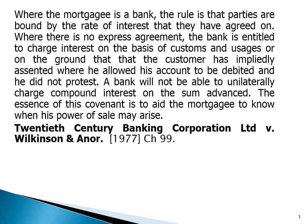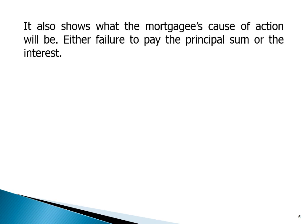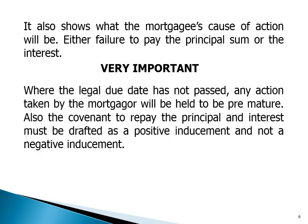The essence of this covenant is to aid the mortgagee to know when his power of sale may arise — 20th Century Banking Corporation Limited v. Wilkinson and Another [1977] Ch 99. It also shows what the mortgagee's cause of action will be: either failure to pay the principal sum or the interest. Very importantly, where the legal due date has not passed, any action taken by the mortgagee will be held to be premature. Also, the covenant to repay the principal and interest must be drafted as a positive inducement and not a negative inducement.